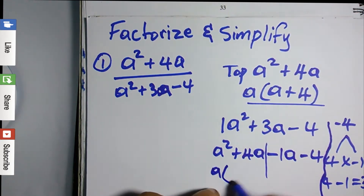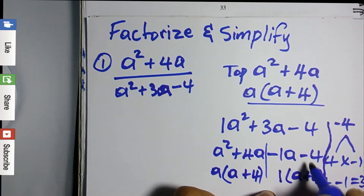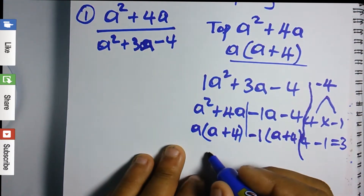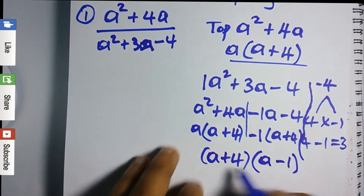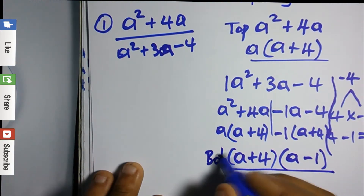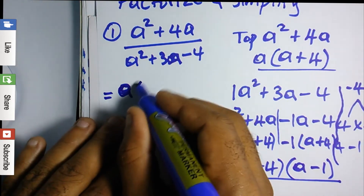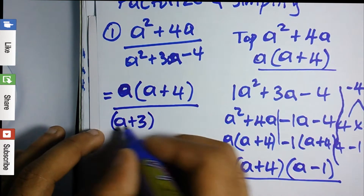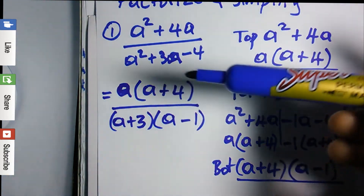Now we factorize by grouping pairs. In the first pair, a is common, giving bracket a plus four. For the second pair, notice the sign changes from negative — so we have a negative outside, giving negative one bracket a plus four. By factorization, this gives us a plus four bracket a minus one. So the full expression is a bracket a plus four divided by a plus four bracket a minus one.